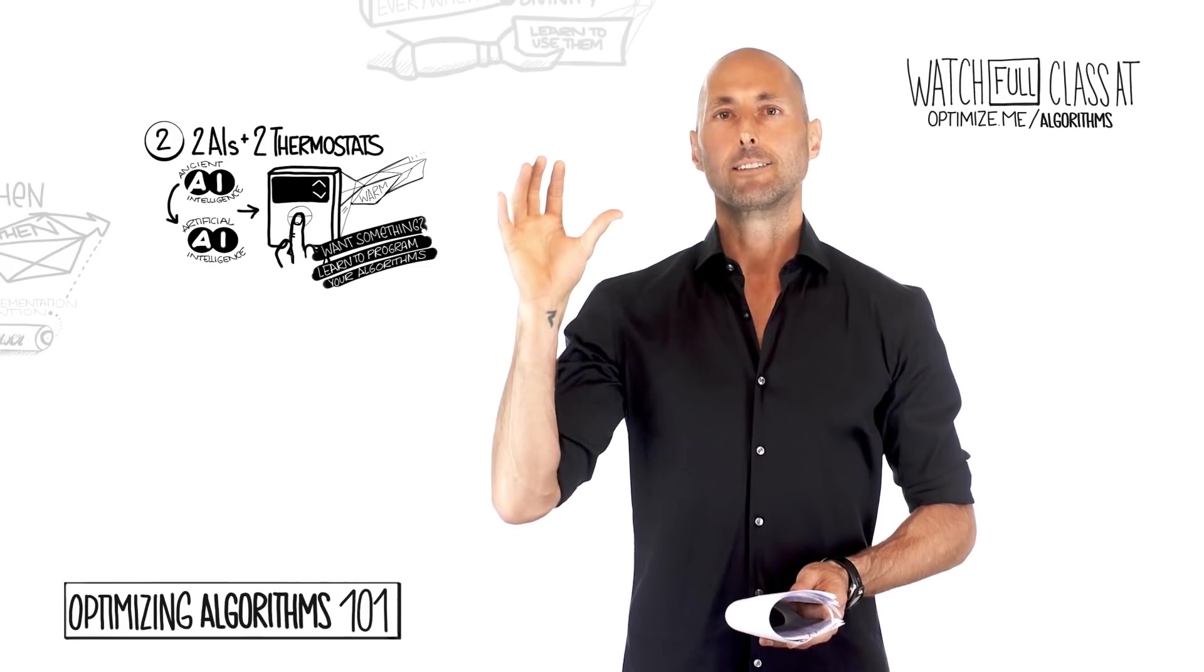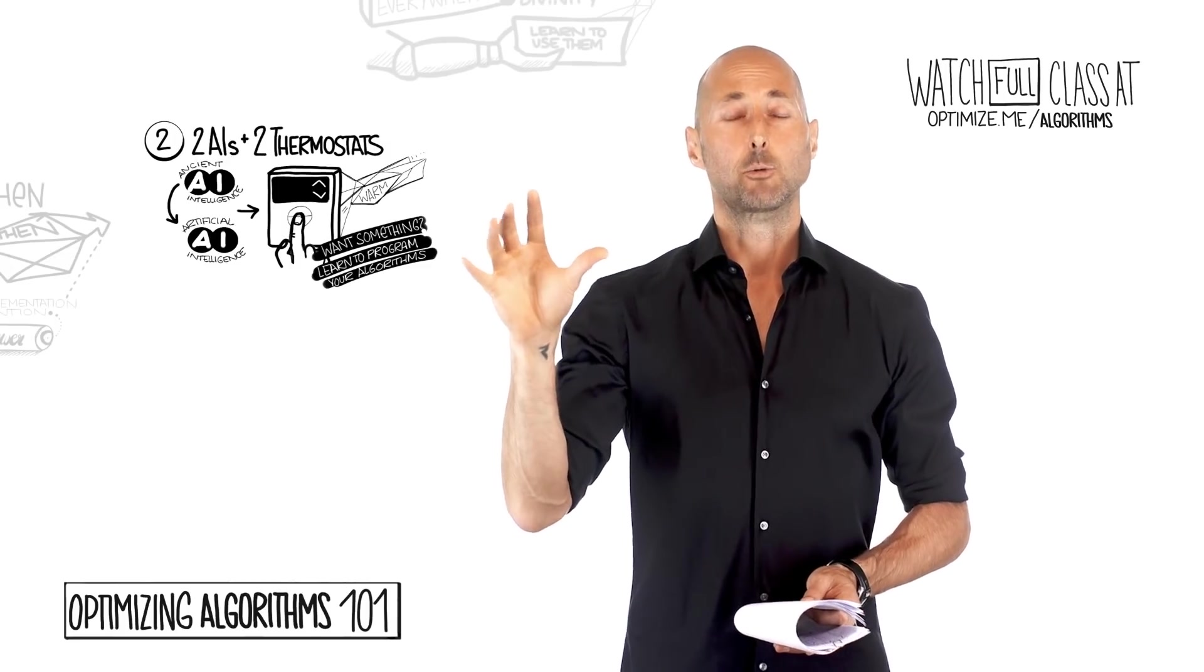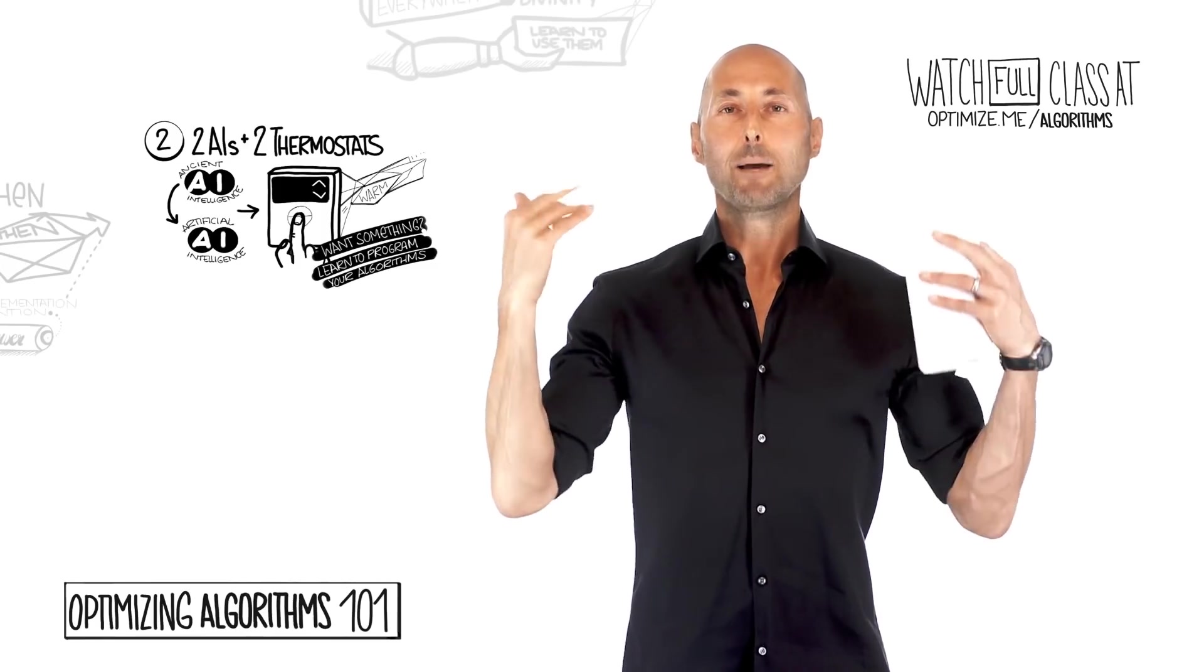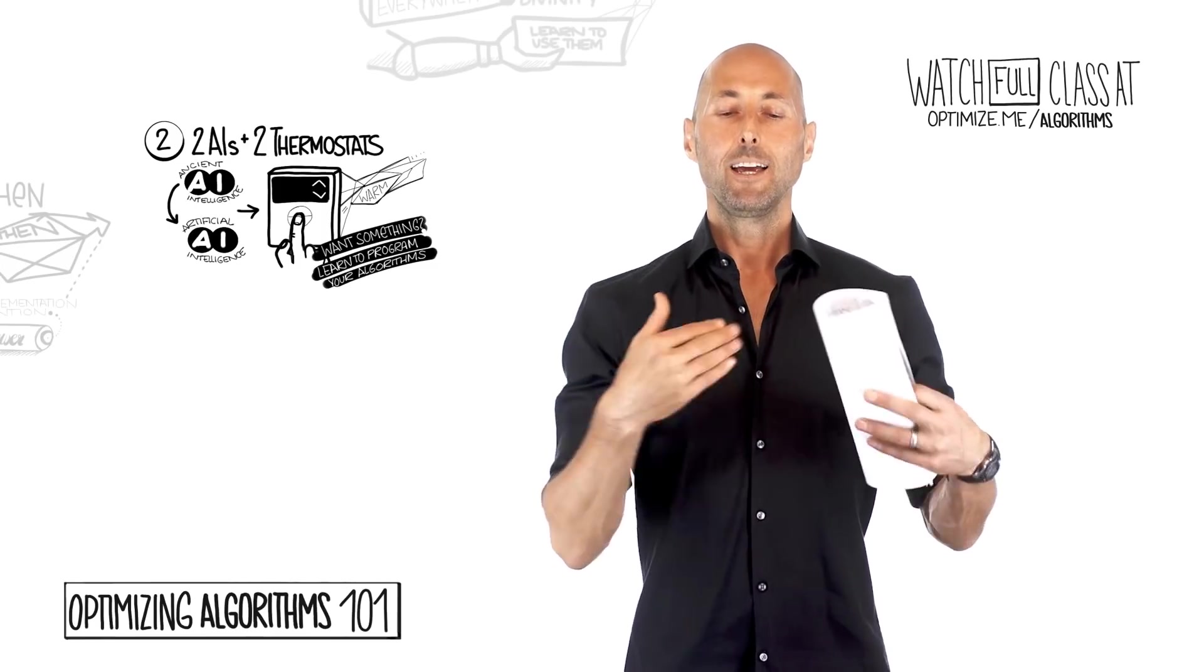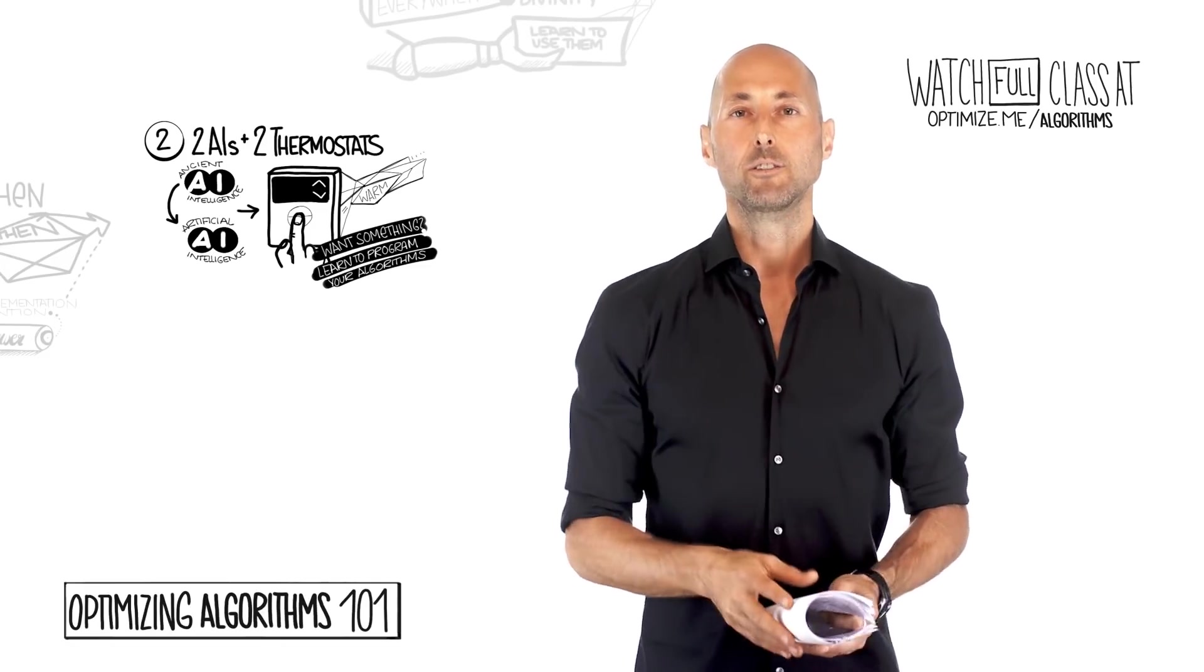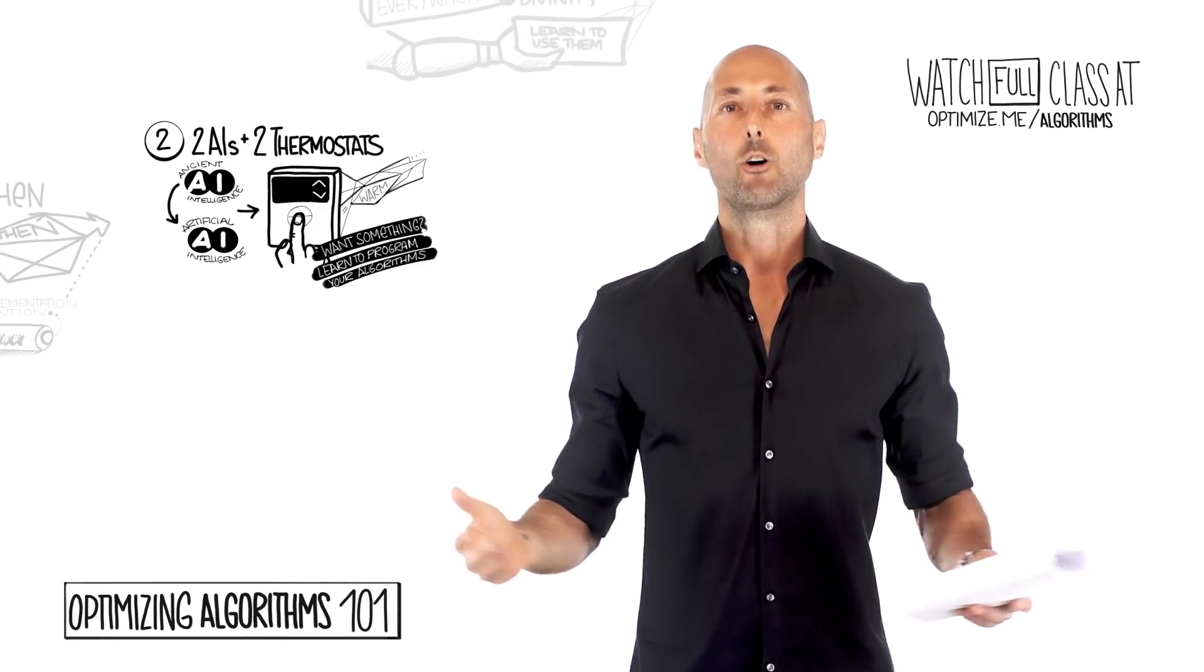Well, guess what? 500 million years ago, we had ancient intelligence and our basal ganglia, behaviors that were repeated became ingrained. What were those behaviors? How do we use that today? Algorithms.